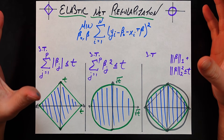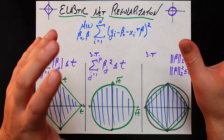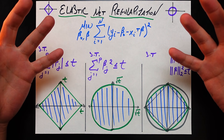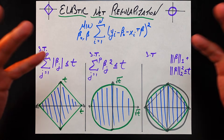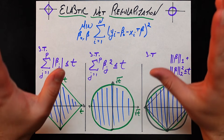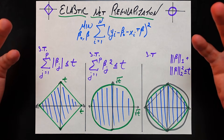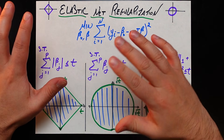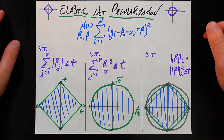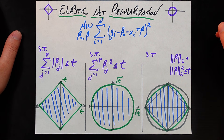Welcome back. On this channel we have videos on lasso regression and ridge regression, also known as L1 and L2 regularization respectively. Those are variations of ordinary least squares where we don't want the coefficients, the betas, to get arbitrarily large. Lasso and ridge are similar in that respect but differ in their approach, leading to very different behaviors. We'll recap lasso and ridge, then discuss how we get the best of both worlds using elastic net regularization.